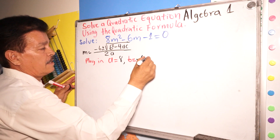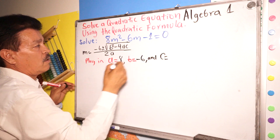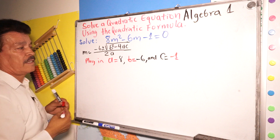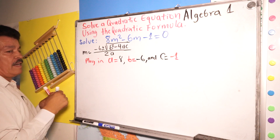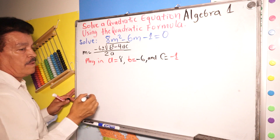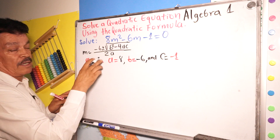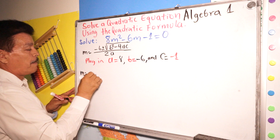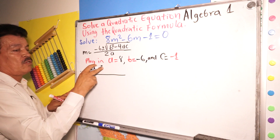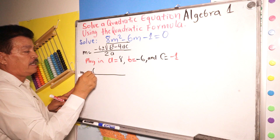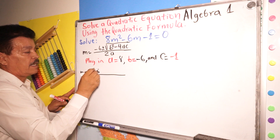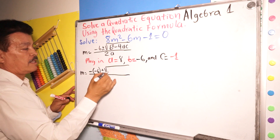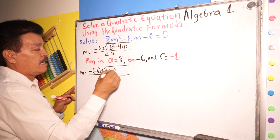And c equals negative 1. After that, substitute the variables. m equals: negative b is negative 6, plus or minus the square root — b is negative 6.